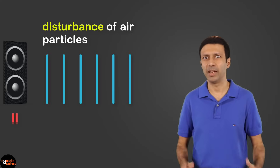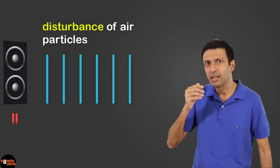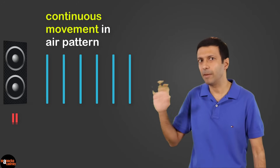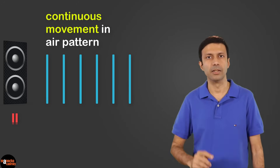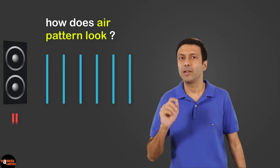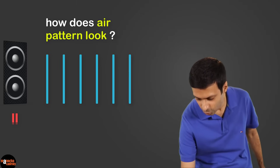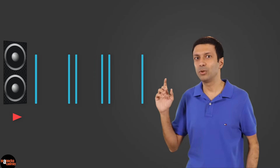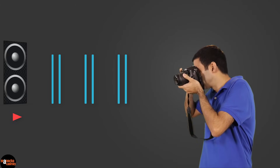As the music keeps playing, vibrations are coming out of that speaker continuously. This causes a continuous movement or disturbance in the air pattern between the speaker and the listener. Now, what would this air pattern look like? Let me help you visualize this. Let's turn on the music one more time, look at the air pattern, and take a snapshot of the layers of air.